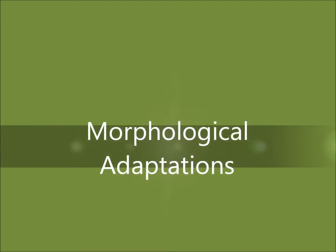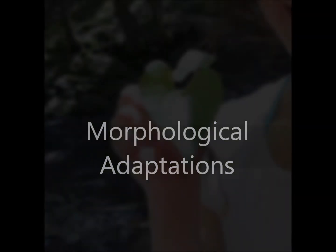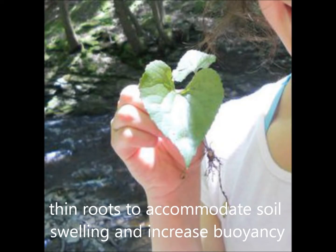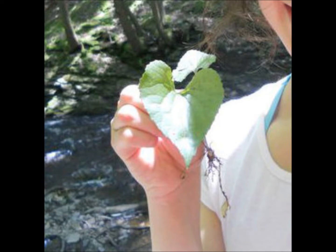The roots, stems, and leaves of aquatic plants differ from their terrestrial counterparts. The roots are typically smaller, as water can diffuse directly into the leaves. Those partly or wholly submerged in water develop long, thin roots to increase buoyancy and for more flexibility when clay soil swells.